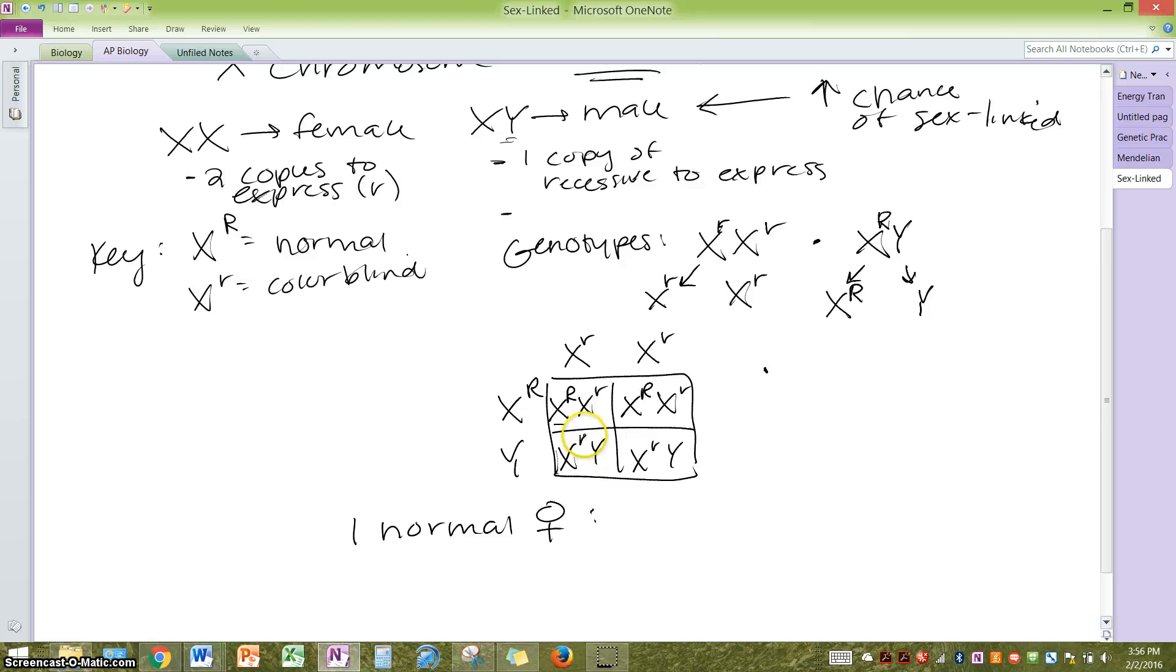The males are the same thing. They are both colorblind because they got that colorblind allele from mom. Note the males will always get their X's from mom. They never get them from dad. Let's see one colorblind male. And that's how you do it.